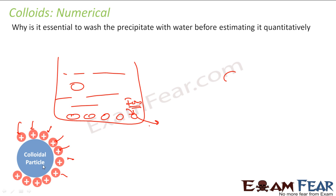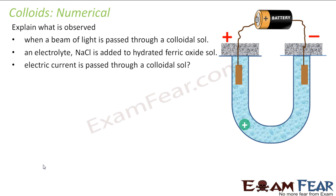So these ions will be adsorbed on the surface of this colloidal particle. And if you want to estimate it, it's good to wash it off. It's good to remove these red ones, then you will get the exact quantity of the colloidal particle. And thus we wash the precipitate before estimating it. And the best thing to wash - water, universal solvent.